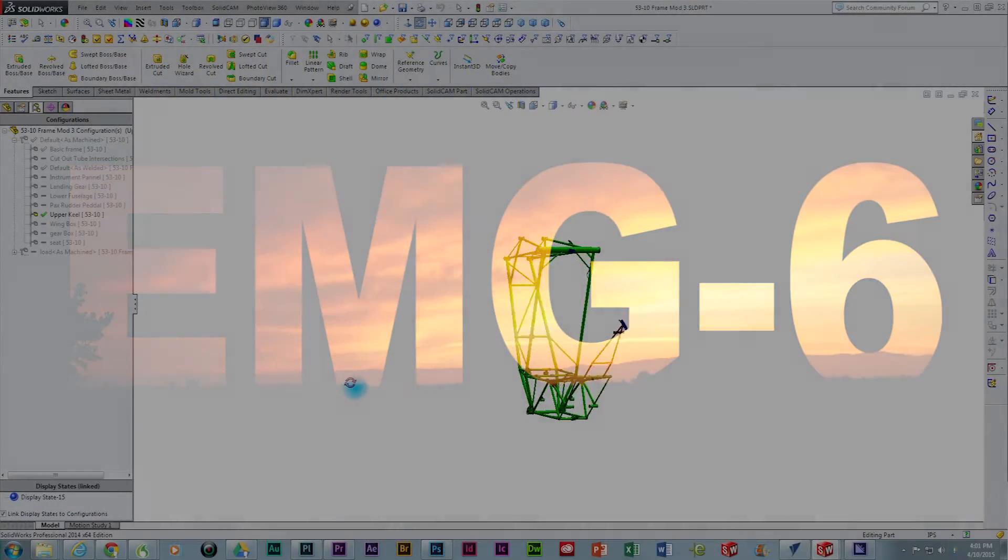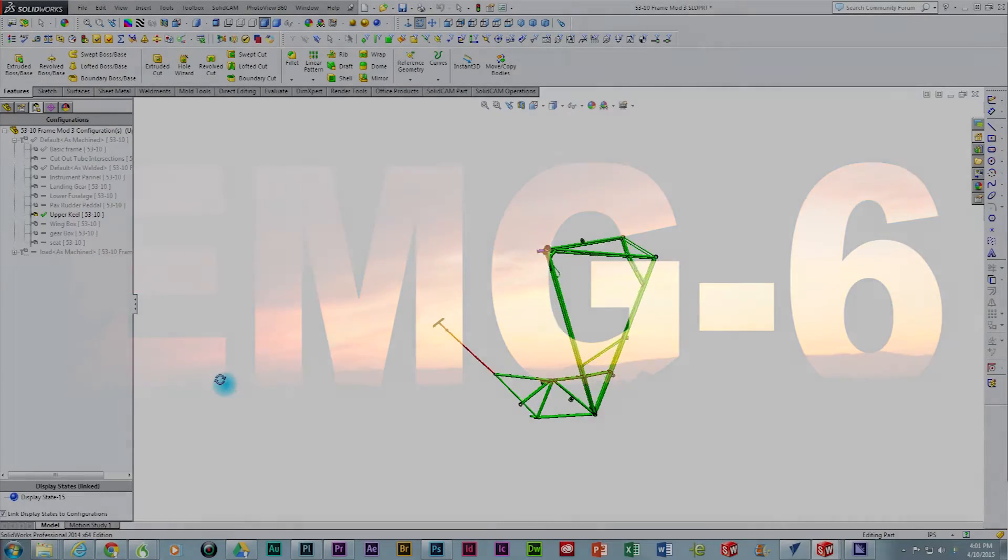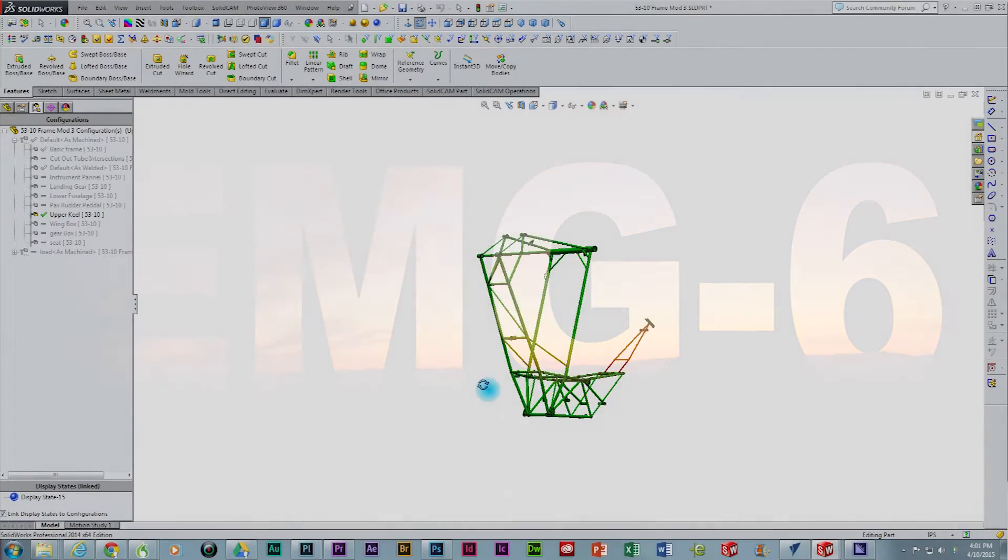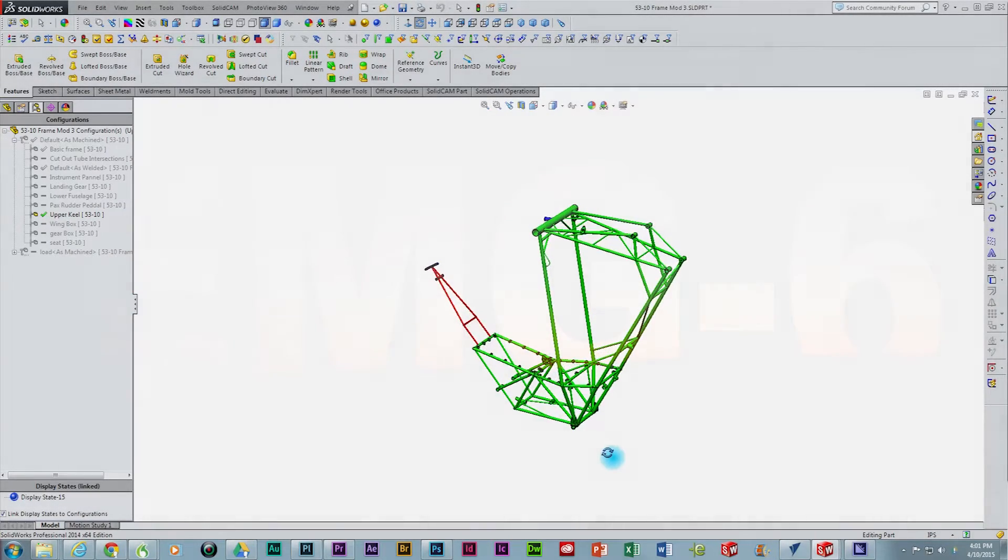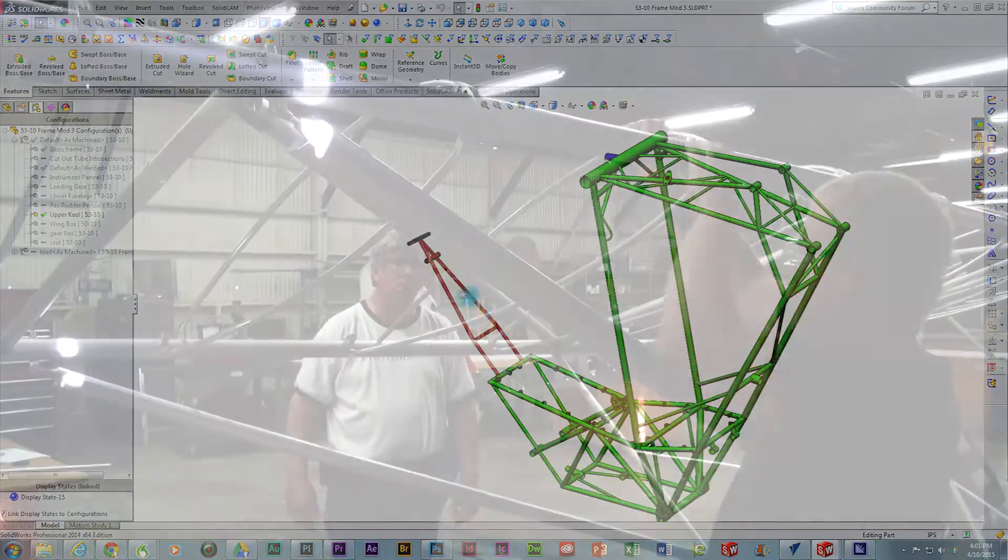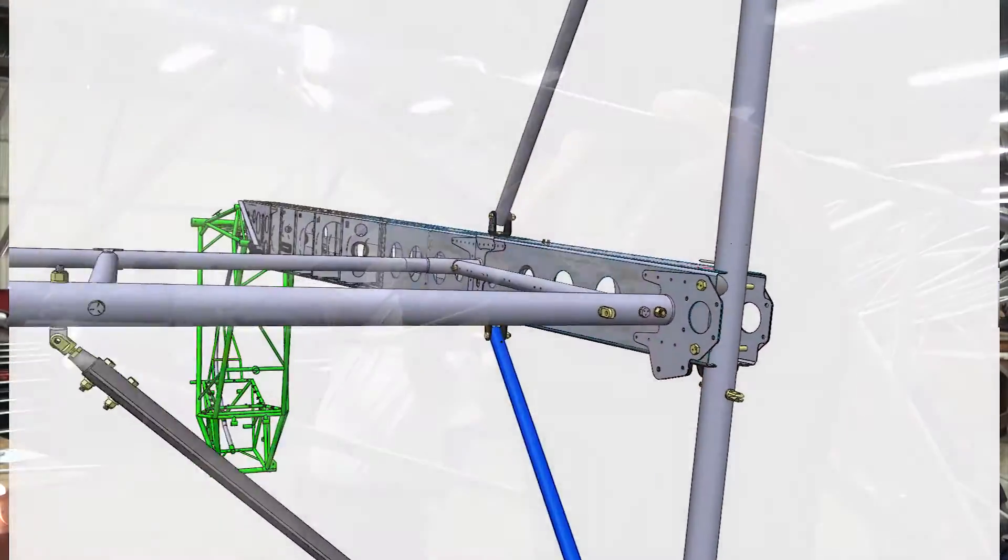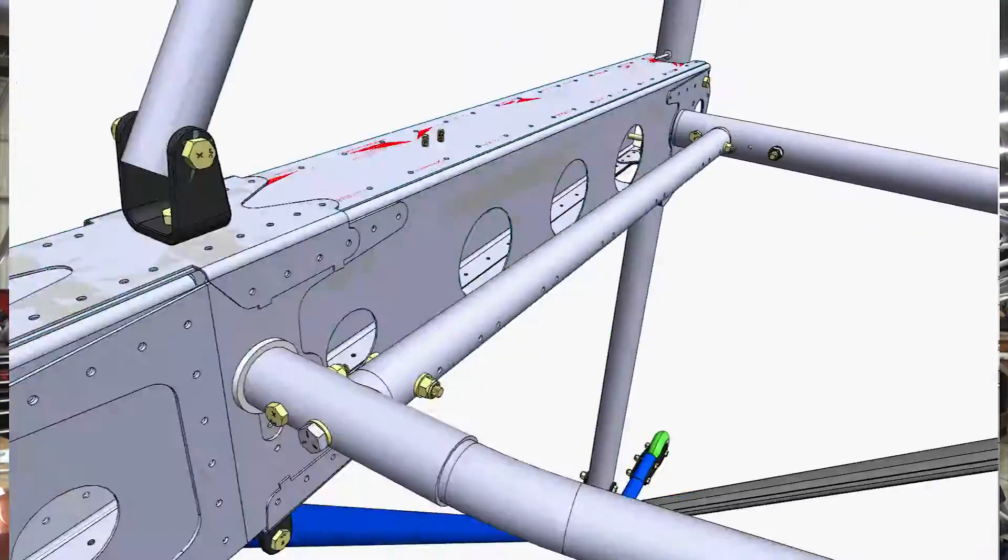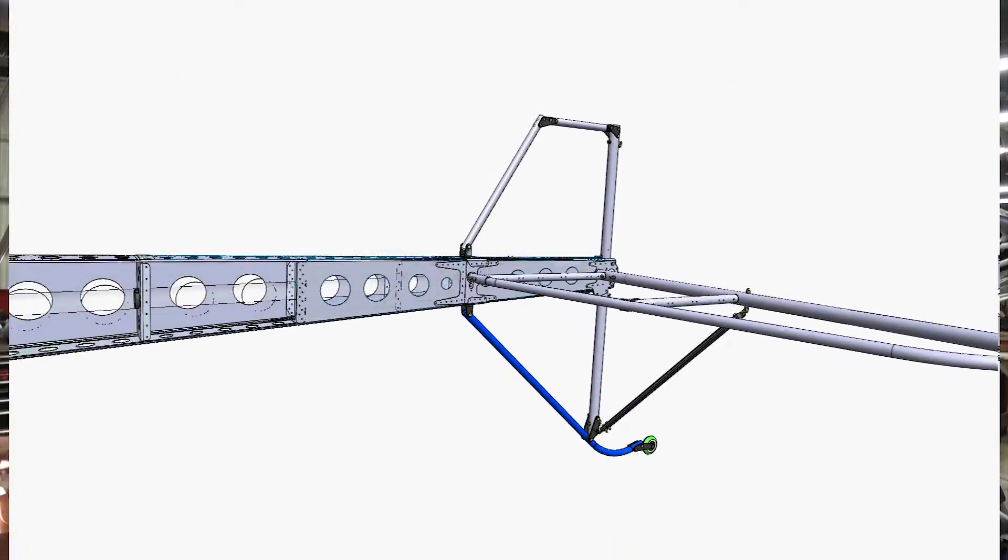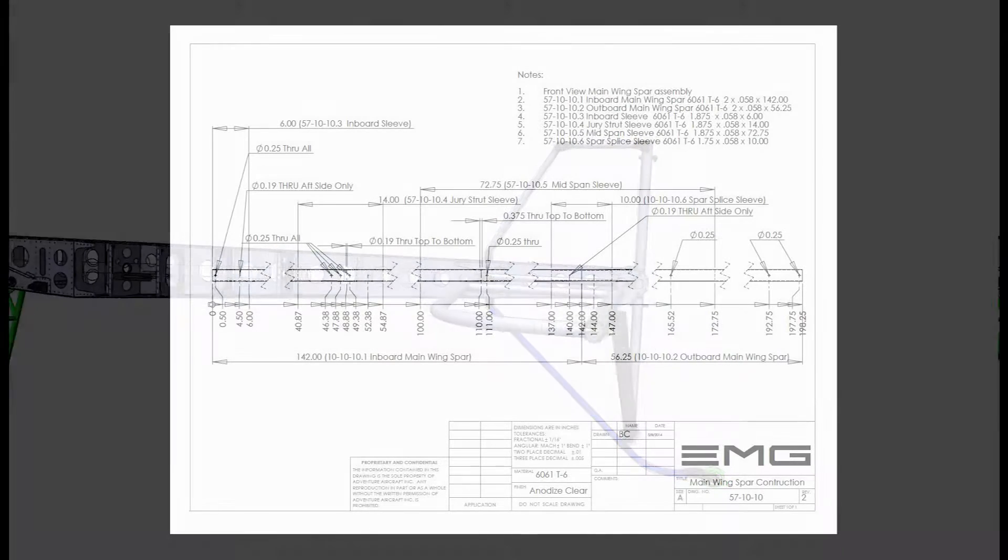Pretty much every single aspect of building the EMG6 involves using tubing for its construction. We use 4130 chromoly steel tubing throughout the fuselage assembly and we use 6061 T6 aluminum tubing throughout the rest of the structure including the wings, the stabilizers, and the flight controls.